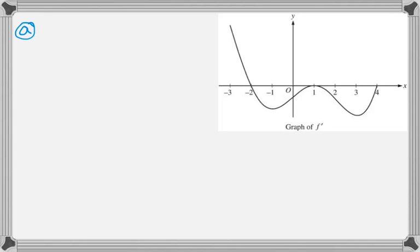So the first question is to find all x-coordinates at which f has a relative maximum, and then to give a reason for my answer. Well, I know that f will have a relative maximum if the derivative changes from positive to negative, so looking at the graph, the only place that actually happens is at negative 2.